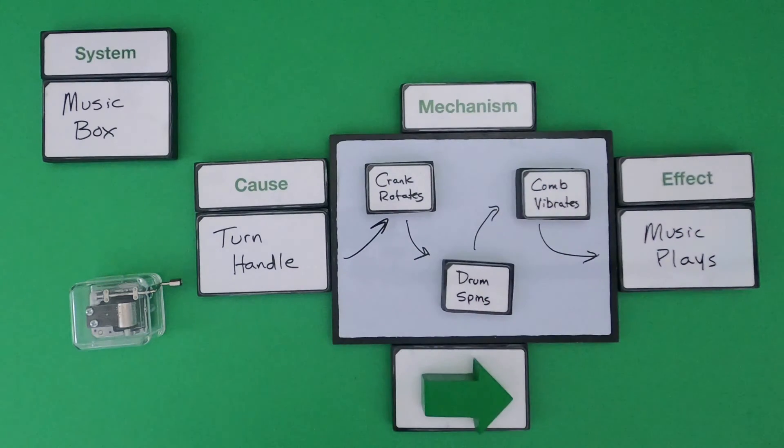So this would be our cause, mechanism, and effect, and I could read it from left to right. I turn the handle which rotates the crank, which spins the drum, the combs vibrate, and then the music plays. So that's going to be our cause, mechanism, and effect.